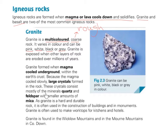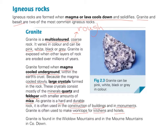These crystals consist mostly of the minerals quartz and feldspar, with smaller amounts of mica. As granite is a hard and durable rock, it is often used in the construction of buildings and in monuments. Granite is often used to make worktops for kitchens and hotels. Granite is found in the Wicklow Mountains and in the Mourne Mountains in County Down.